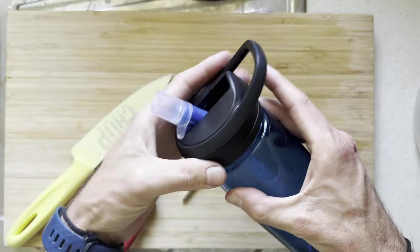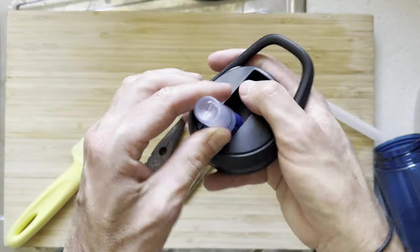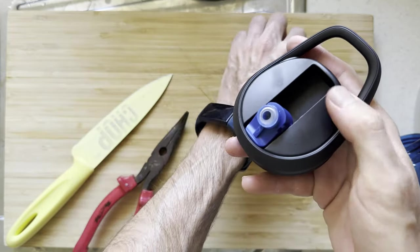So to begin the process, simply take the lid off, and then we can go ahead and pull the straw out, and then we can also pull the bite valve off just like this. It comes off really simply and easily.